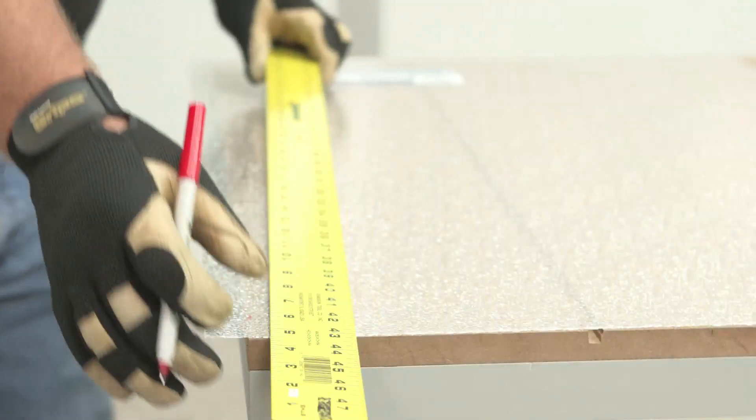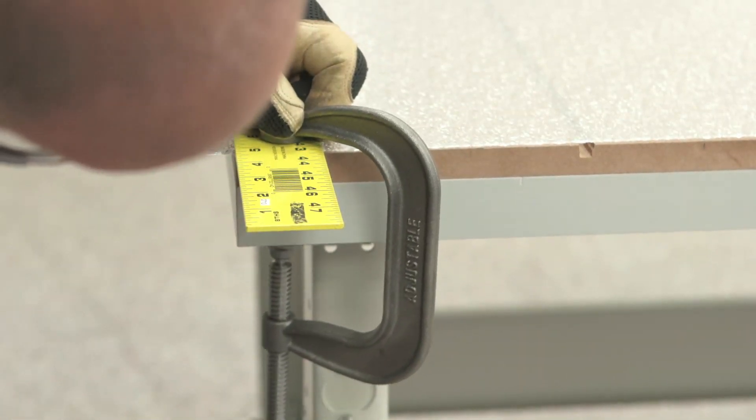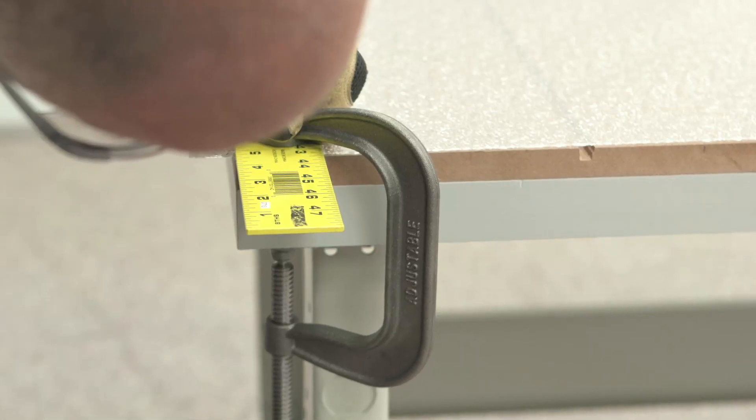Then, secure the lighting panel and straight edge to the work surface with clamps. Place the straight edge on the side of the panel you are keeping to ensure any errors will occur on the scrap side.